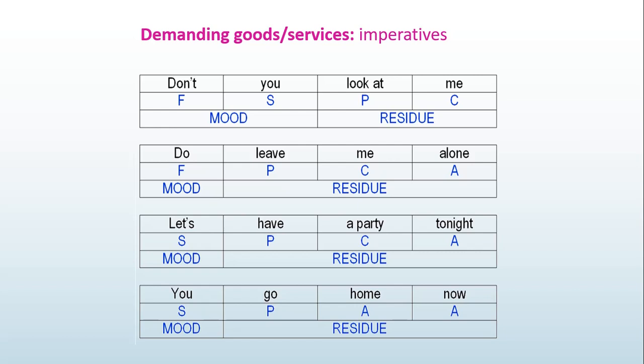Now next is the imperative. This is the last one. Well, some imperative has subject and finite here, but some of them don't. Let's take a look at the first clause. Don't you look at me. So this is a negative imperative. It means that you're told not to do something. This type of imperative usually has a complete finite and subject: don't you, or do leave me alone. So here we have the finite.